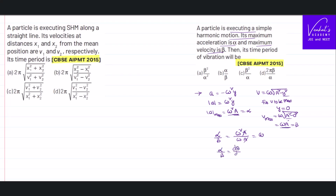Since alpha/beta = ω = dθ/dt, after one complete rotation the angle covered is 2π and the time taken is the time period T. Therefore, T = 2π/ω = 2π·(beta/alpha). Option D is the answer for this question.